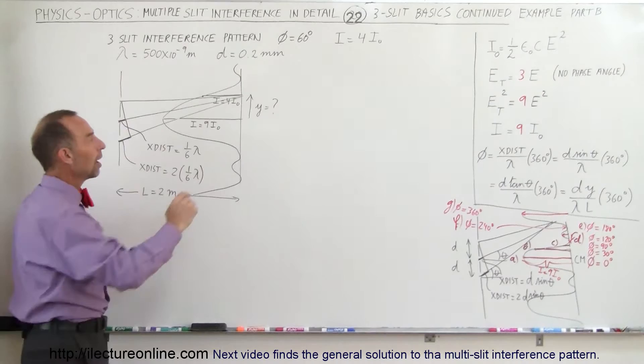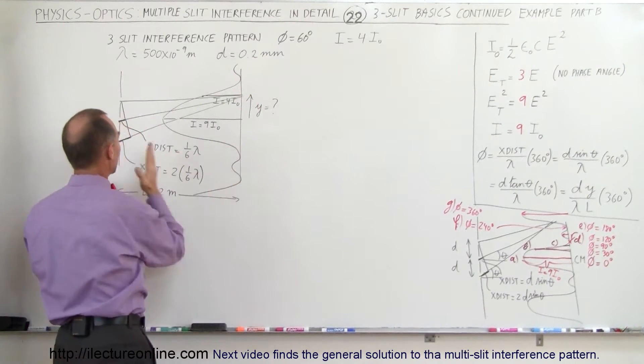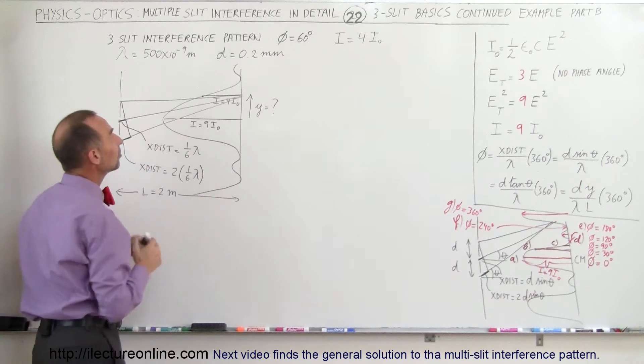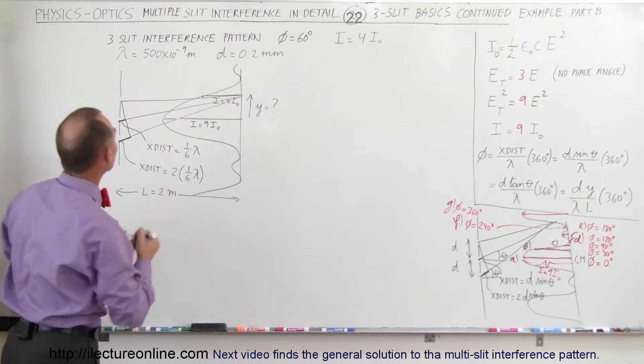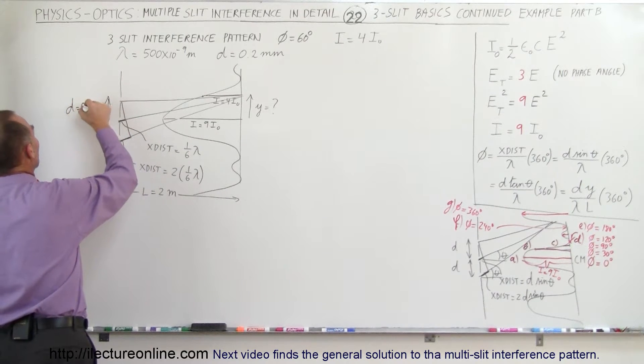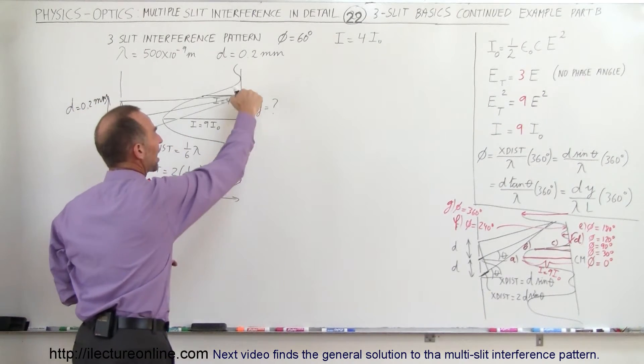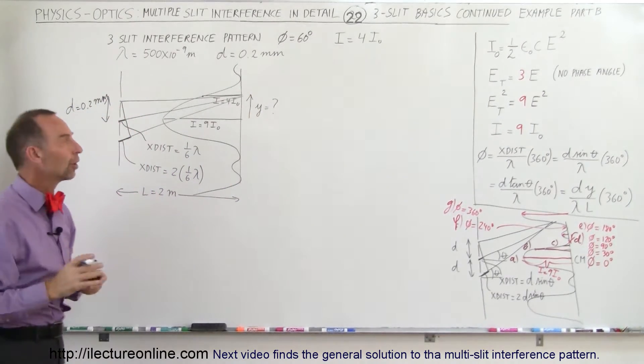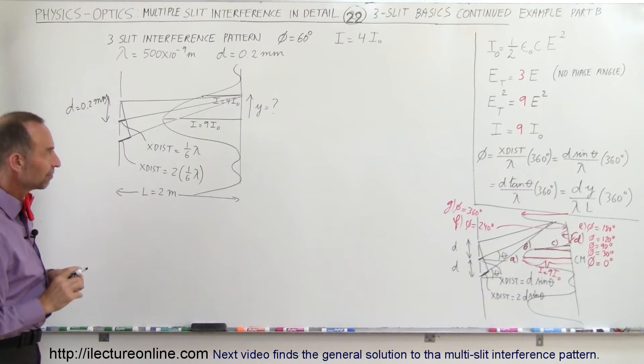We want to know now how far away from the central maximum that is, if the distance between the slits and the screen is two meters, and the distance between the slits are 0.2 millimeters. So this is the distance between the slits, d, which is equal to 0.2 millimeters. How far away from the central maximum do you find the intensity of four times the intensity of a single wave? How do we do that?